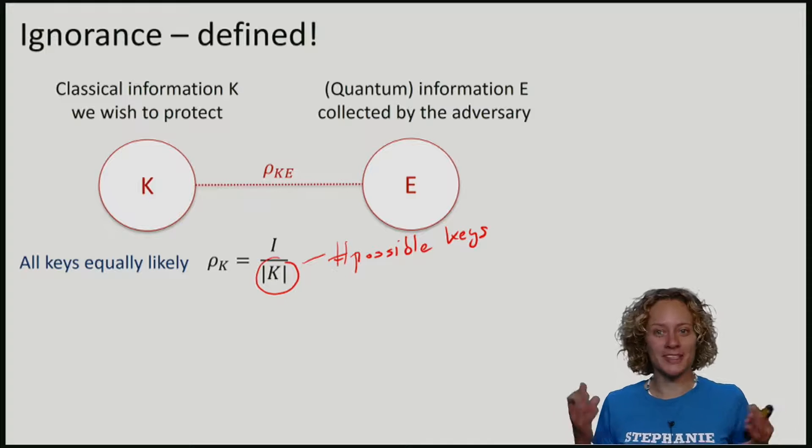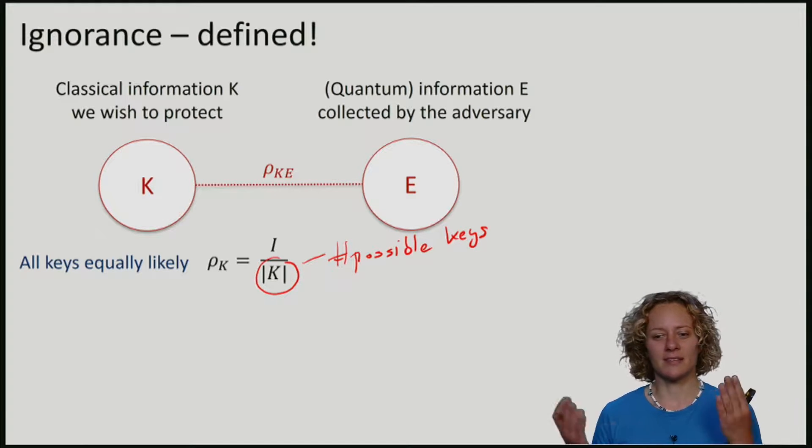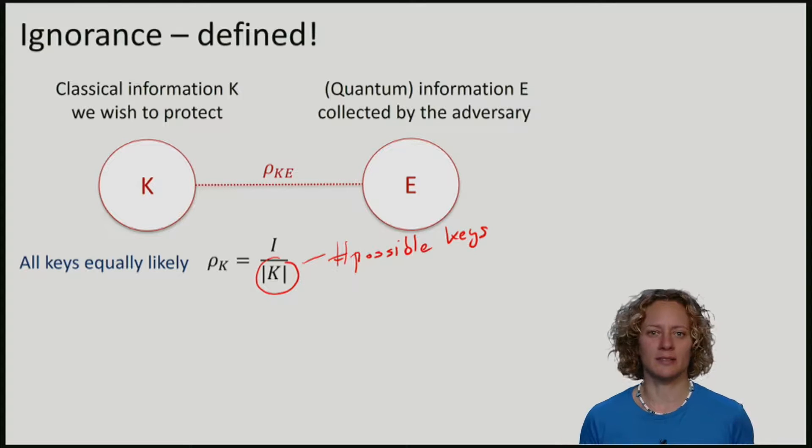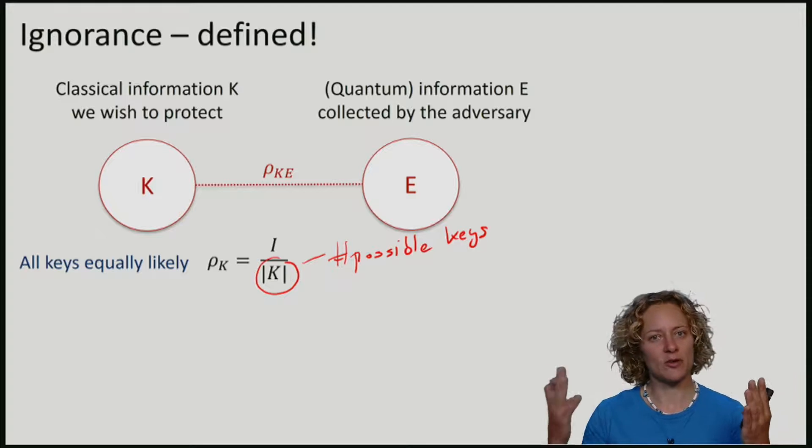This is great, our key is random, but that does not necessarily mean that Eve is ignorant about the key. In fact, it could be that KE is maximally correlated. The key is random, but Eve has a copy of it.